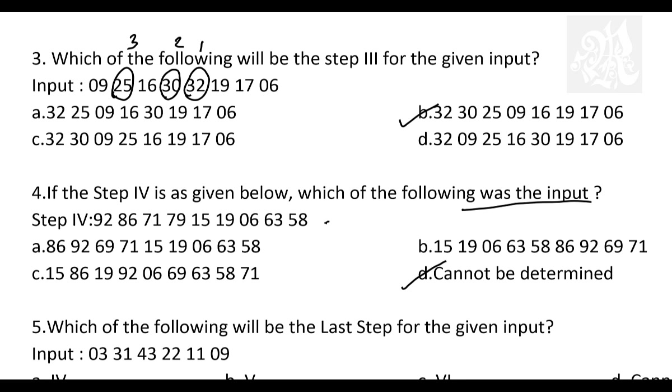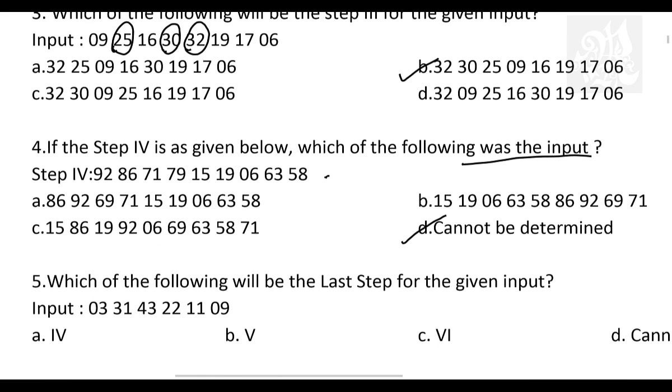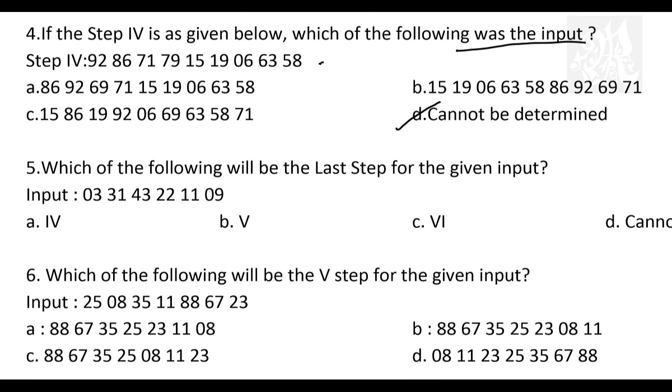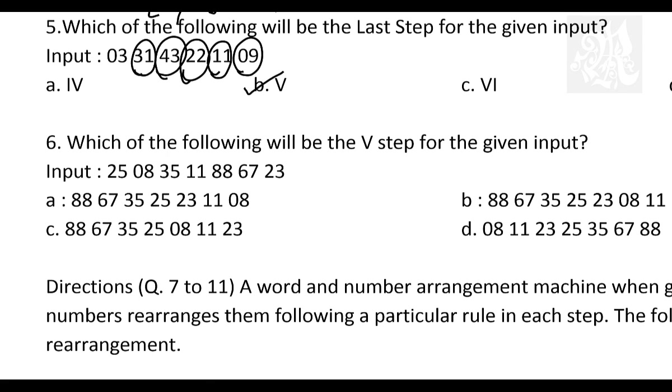So in shifting and descending sort or ascending sort, you cannot backtrack. So the answer will definitely be cannot be determined. You'll have one question in one set for sure on this. There's more like a one seconder for you. Just click on cannot be determined and go ahead.